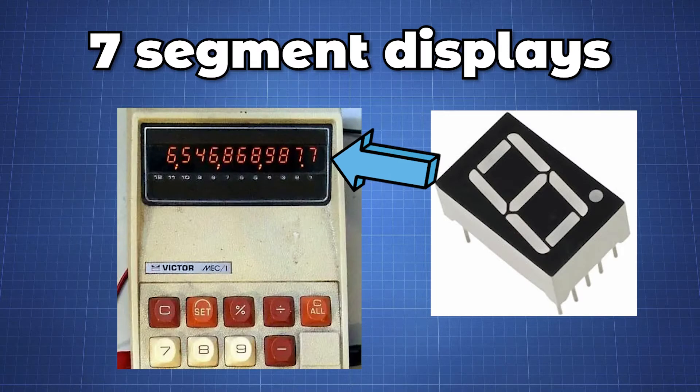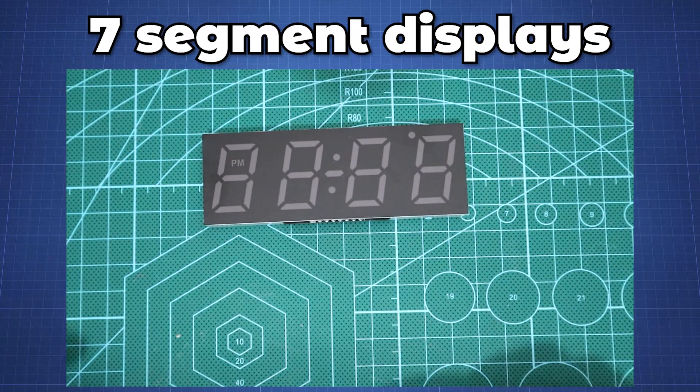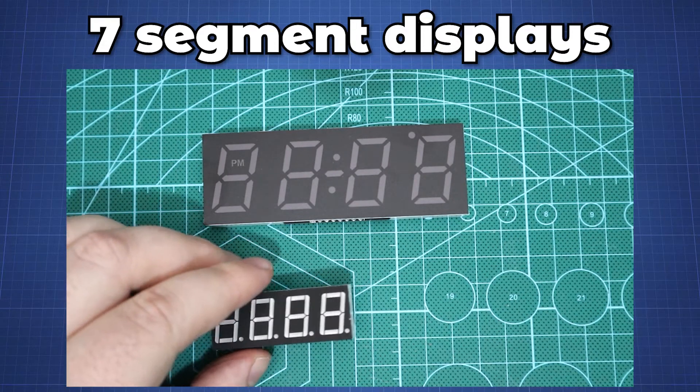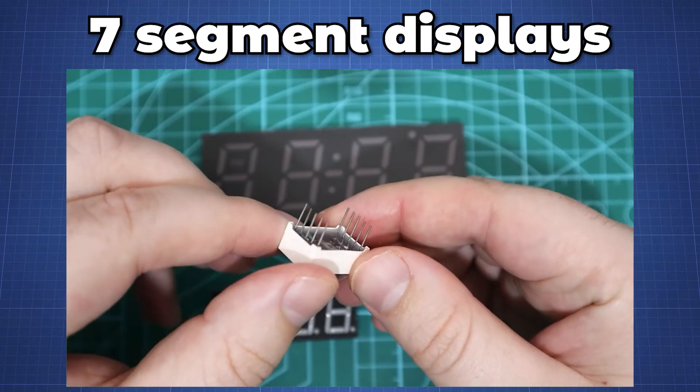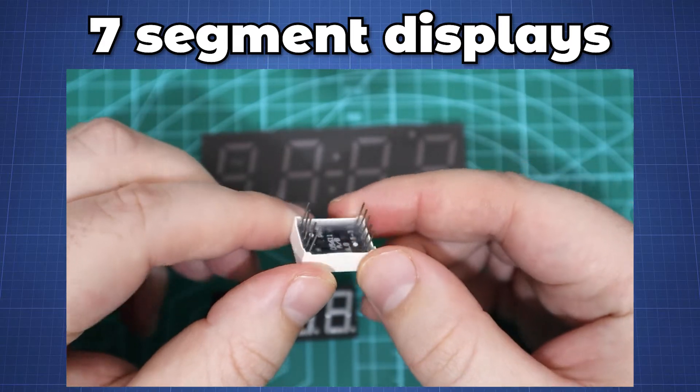Seven segment displays have been used for a long time and are great for your DIY projects. These displays come in different shapes and sizes where some do not have controllers and use separate pins to light up a specific segment.